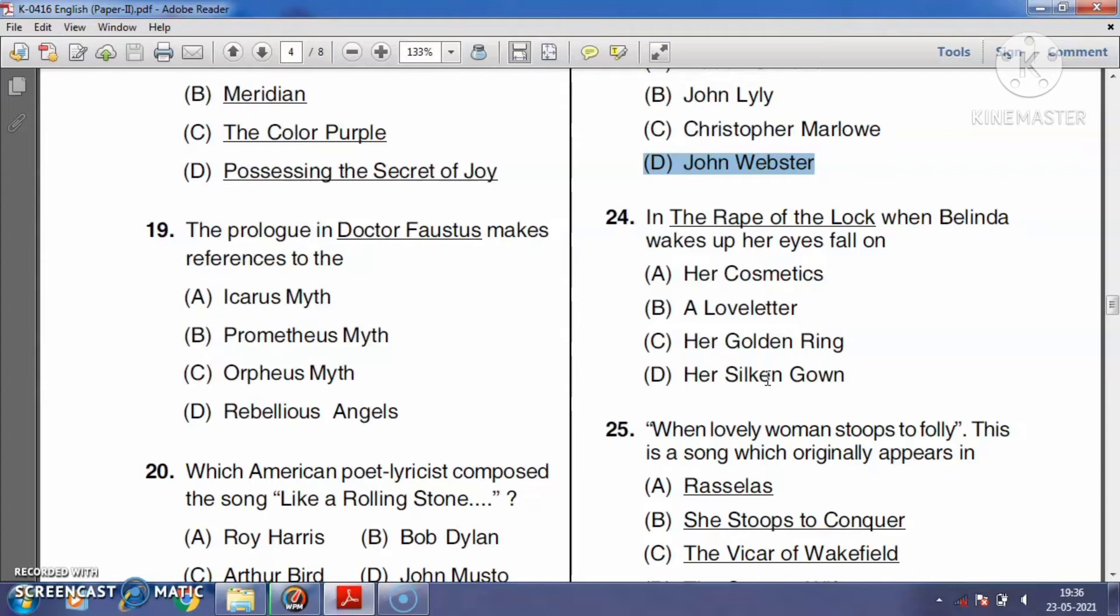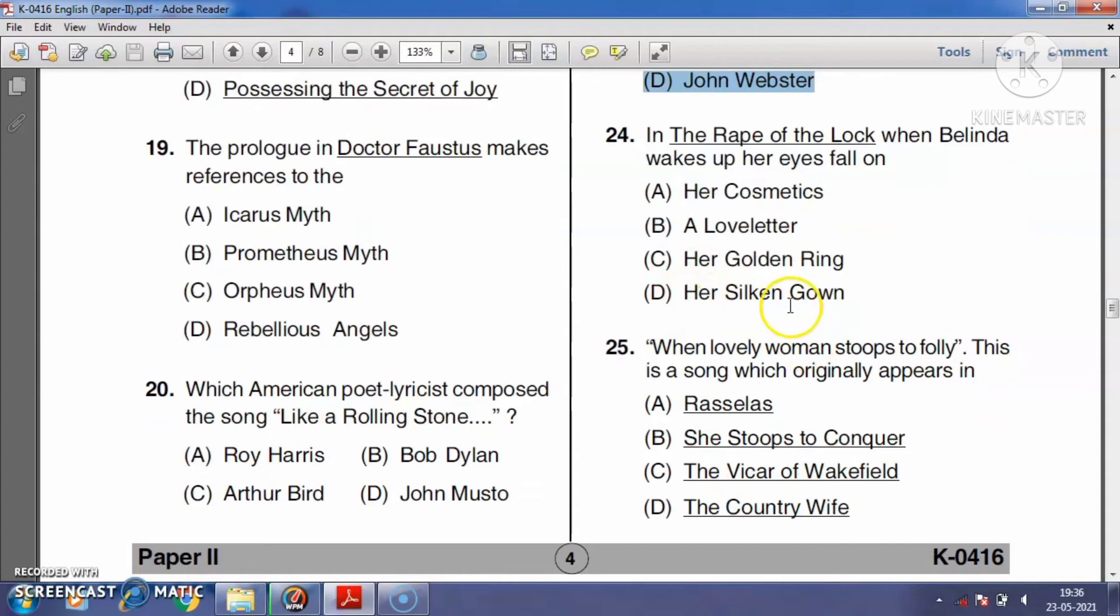Question number twenty-four: In The Rape of the Lock, when Belinda wakes up, her eyes fall on her cosmetics, love letters, her golden rings, or her silken gown? The Rape of the Lock is a mock-epic poem by Alexander Pope, published in 1712. The poem is based on a real incident involving the poet's friend John Caryll. The poem begins with Belinda, a beautiful and wealthy young woman, asleep. When she wakes up, her eyes fall on love letters. So the right answer is option B.